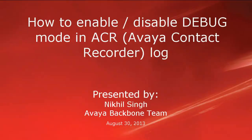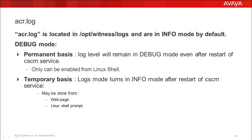Hi, I am Nikhil Singh with Avaya Backbone Team. Here I want to show how to enable or disable acr.log in Avaya Contact Recorder. acr.log are located in opt/witness/log directory. By default, acr.log are in info mode and have limited information. Avaya or variants require logs in debug mode for analysis.